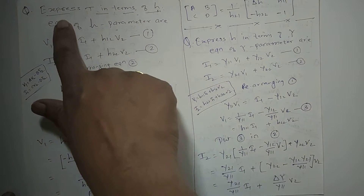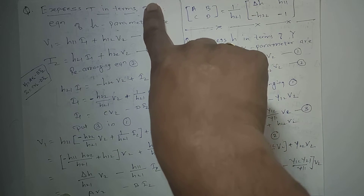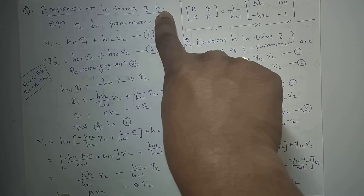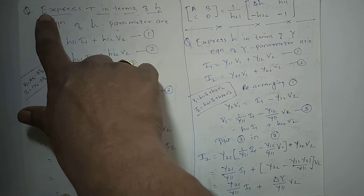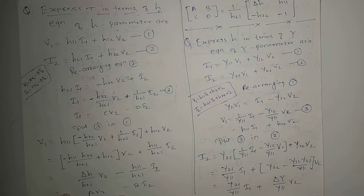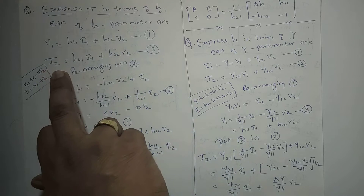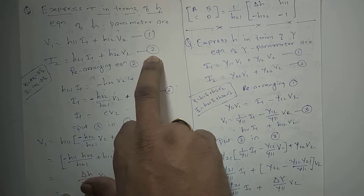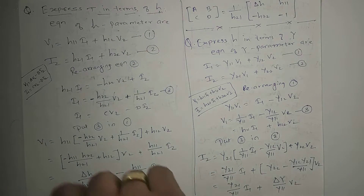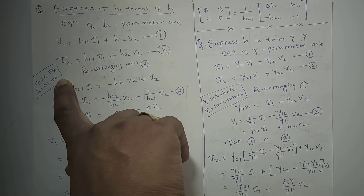Now let us see the remaining conversions. Suppose you want to express t in terms of h. The general procedure is to write the equation of the second parameter and convert that equation into the form of the first parameter. Here, we write the equation of the h parameter and convert it into the equation of the t parameter. The h parameter equations are: v1 equals h11·i1 plus h12·v2 (equation 1), and i2 equals h21·i1 plus h22·v2 (equation 2). From these two equations, we have to obtain the t parameter equations: v1 equals A·v2 minus B·i2, and i1 equals C·v2 minus D·i2.